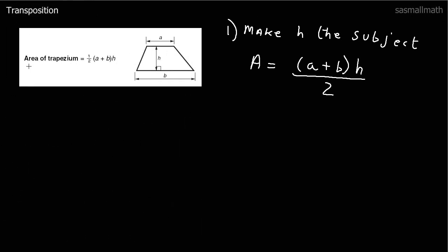Now we'll look at the area of the trapezium, which is given by this formula: half of (a plus b) in a bracket, times by h. That's the base and the top of it, multiplied by the height, and it's half of that. Say we've got to make h the subject — we're given the area, we've got the top and bottom, and we've got to find h. I've rearranged it slightly: instead of saying half, the whole thing is (a plus b) times h over 2.